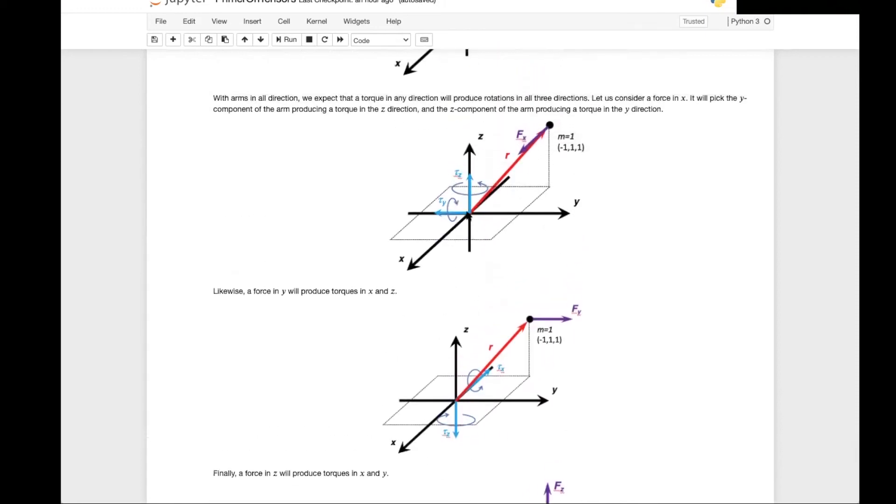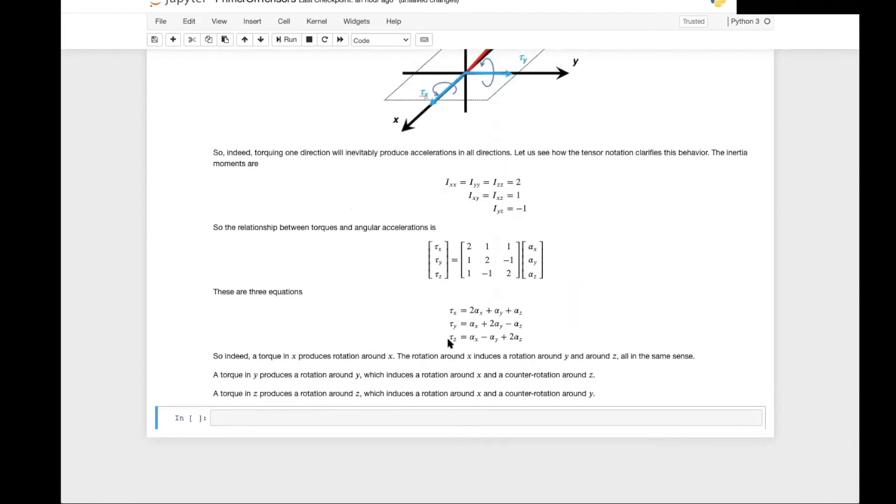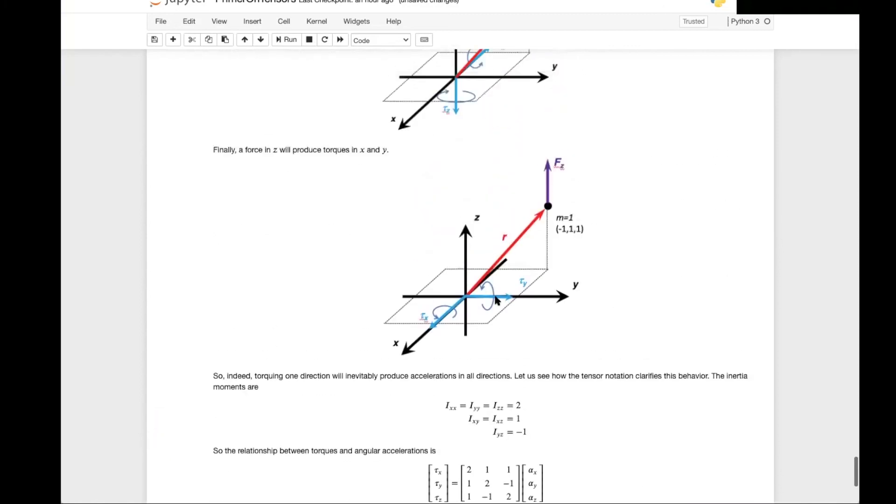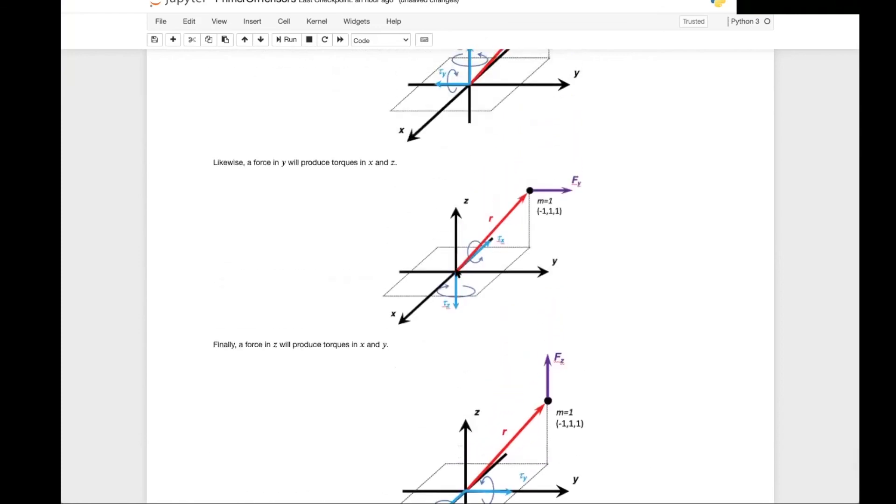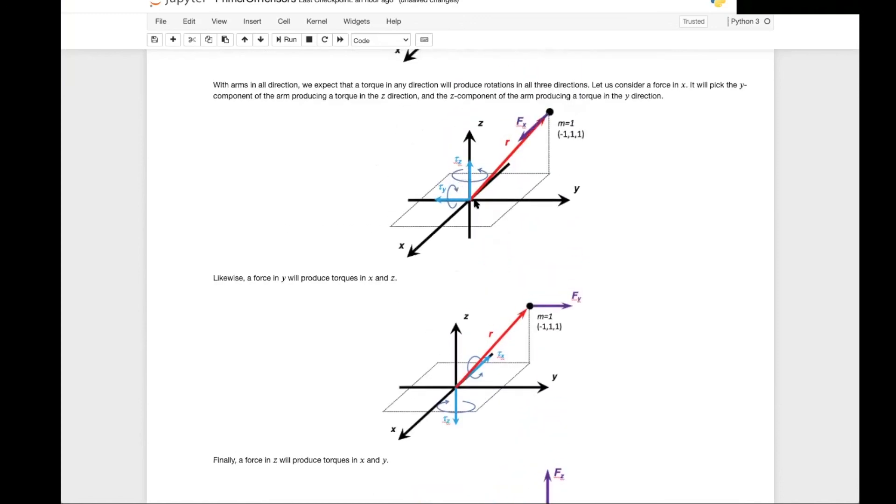And finally a torque in z produces a rotation around z, followed by a rotation around x and a counter rotation around y. This is again what we have here in this graphical representation. If you have a rotation in z, you have a rotation of same sign around x and it will also induce a counter rotation, a rotation of opposite direction around the y-axis.